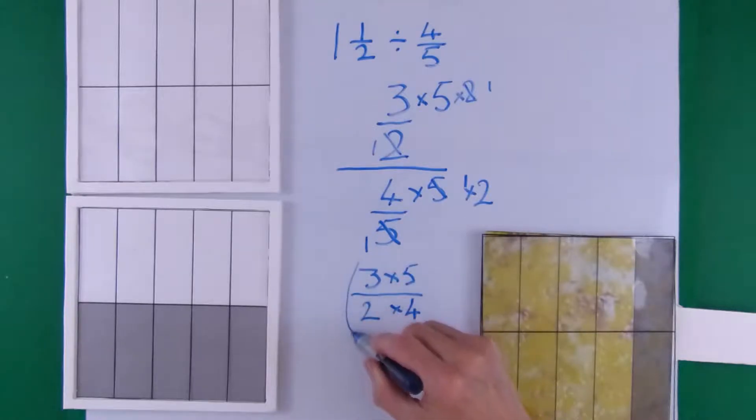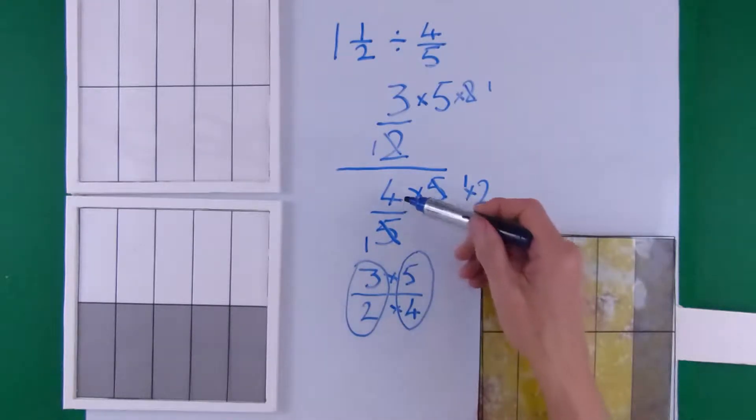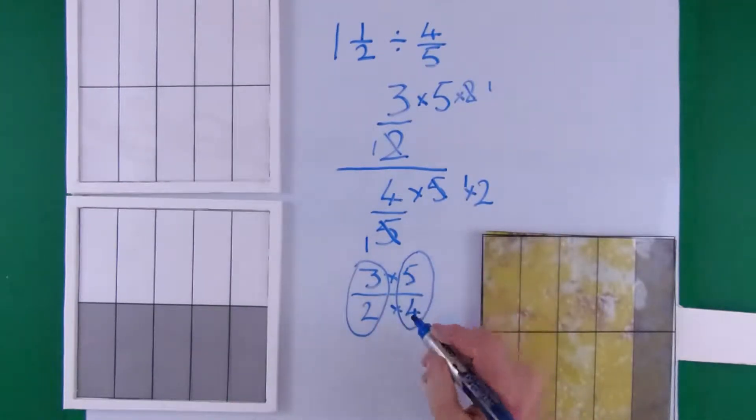You can see the first fraction is the right way up. But the second fraction is upside down. That's why we turn the second fraction upside down. Now we do 3 times 5 equals 15 on top and on the bottom 2 times 4 equals 8.